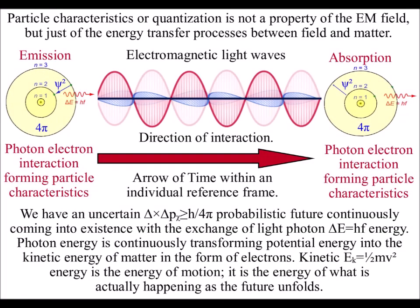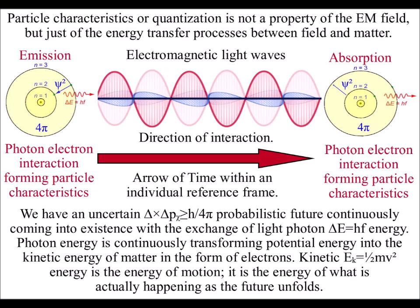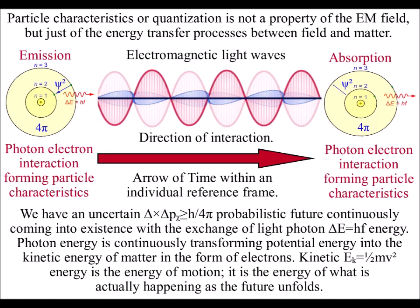In this diagram, we see light as a wave with particle characteristics when we have the absorption and emission of light.